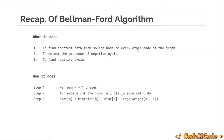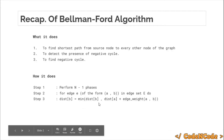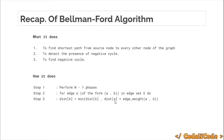We have already seen in the previous lecture how it does this. We know that it performs n-1 phases. In each phase, it goes through every single edge of the edge list, and for every edge E in the edge set (capital E), it tries to relax the distance of node B. So, distance of B equals minimum of distance of B (the already found distance) and distance of A plus edge weight of edge AB. This is how the algorithm works.